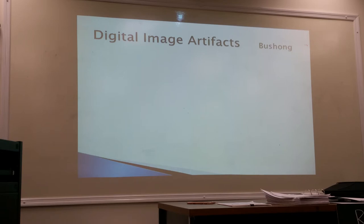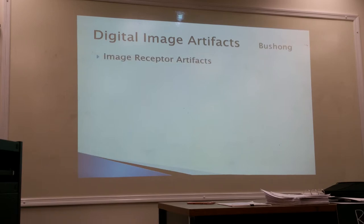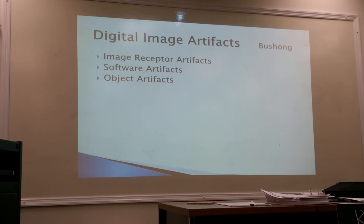With film there's a whole chapter and whole books written about artifacts. With digital, we're not going to have as many as we would with film. Your author Bashan categorizes digital artifacts into three categories: the image receptor itself can cause artifacts, the software used to process the image can cause artifacts, and object artifacts, which to me is the catch-all for everything else.